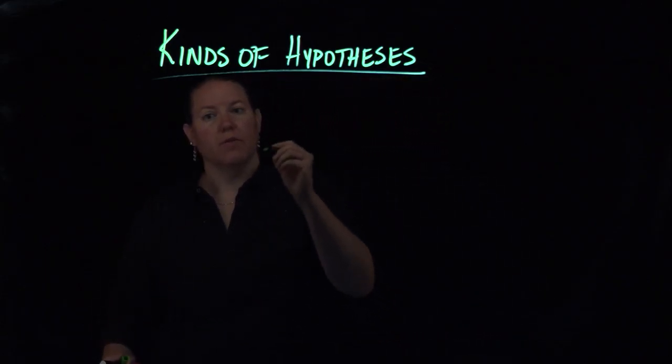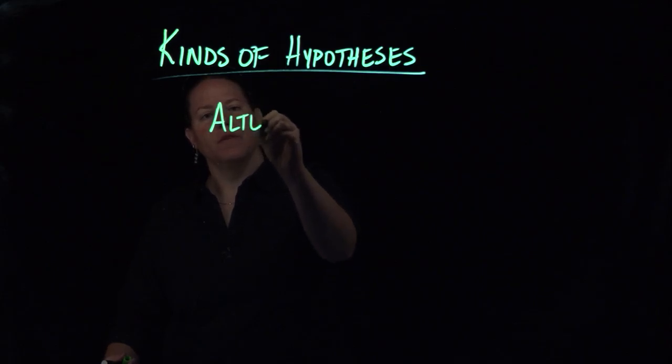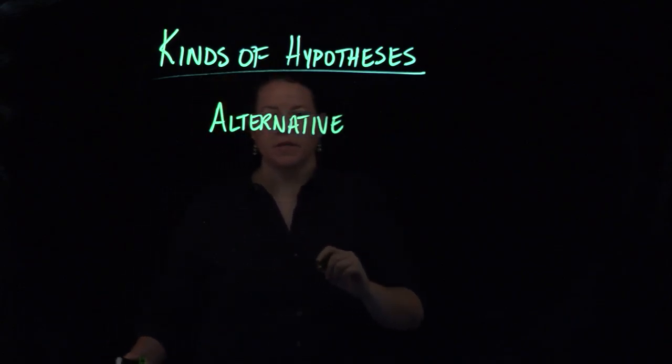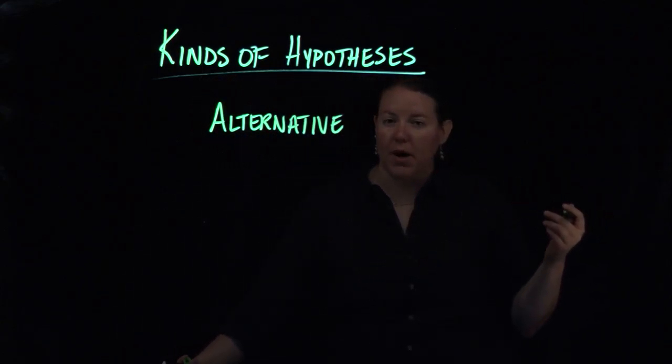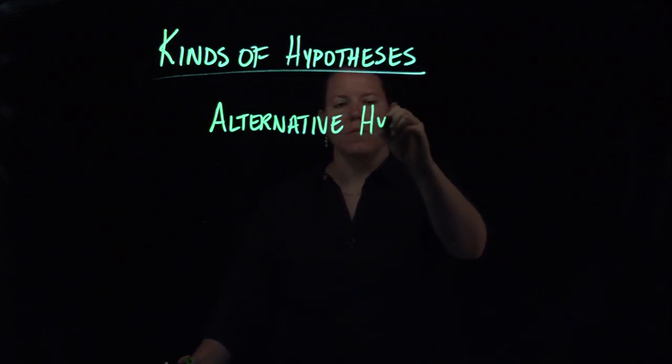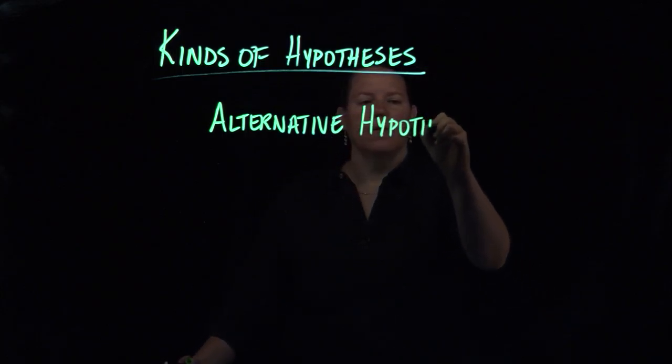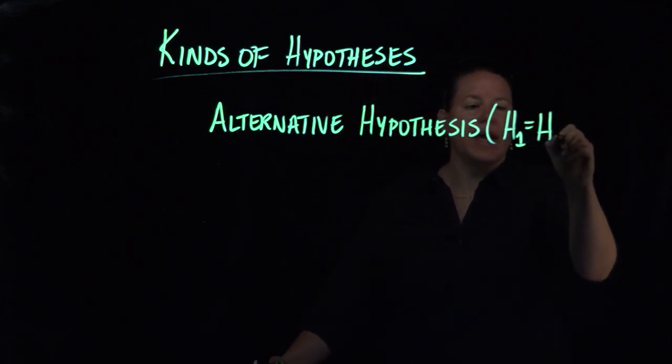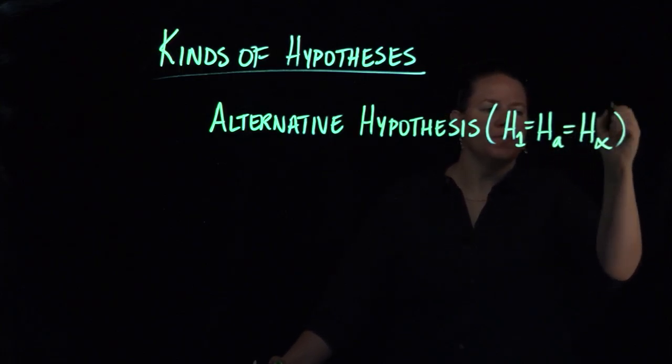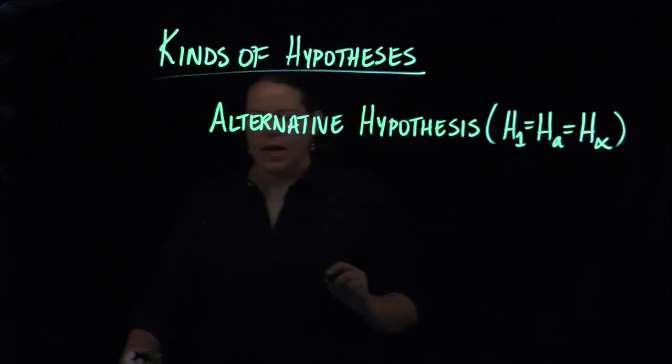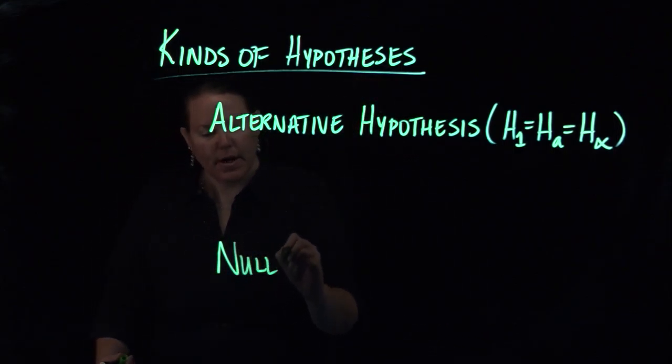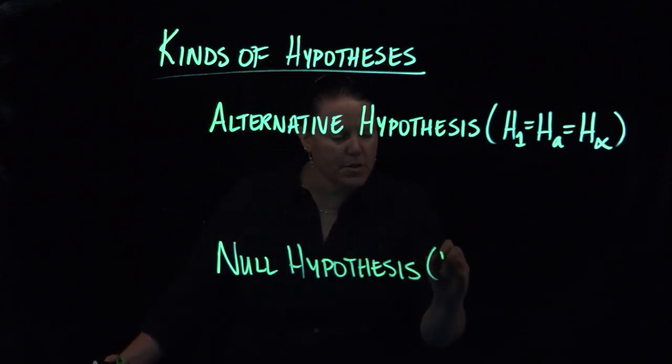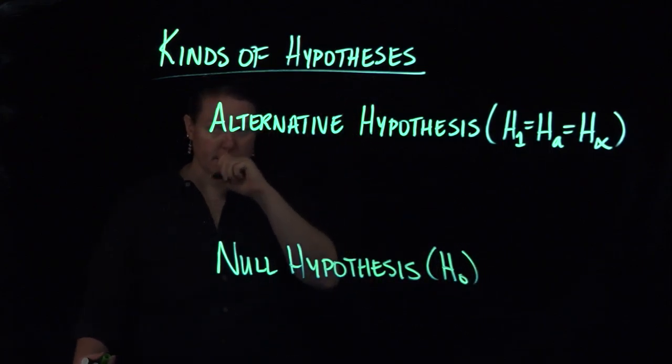So the two kinds of hypotheses that we tend to talk about are the alternative hypothesis, or sometimes it's called the experimental hypothesis. It's often denoted as H1 or HA or H alpha. I tend to go with the H alpha. And then you have the null hypothesis, which is almost always across the board denoted H0.